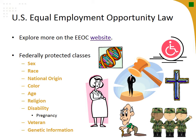Reasonable accommodations can include making facilities more accessible, restructuring jobs, reassignment to a vacant position, or modifying work schedules. Veterans are also protected under EEO law through the Vietnam-era Veterans Readjustment Assistance Act of 1974, which prohibits job discrimination and requires affirmative action to employ and advance employment among disabled veterans, recently separated veterans — people within three years of discharge from active duty — and other protected veterans.